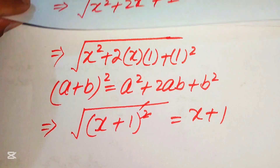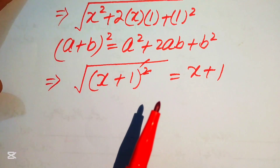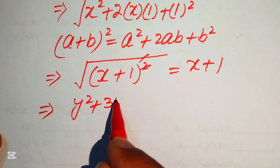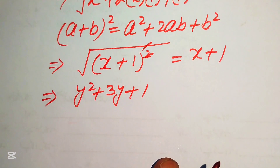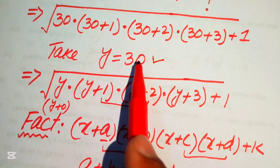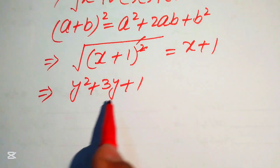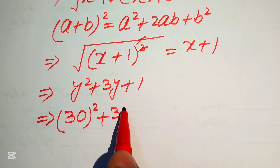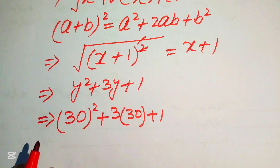Now we back-substitute. Since x equals y² + 3y, the result is y² + 3y + 1. Then substituting y equals 30, we get 30² + 3 times 30 + 1.